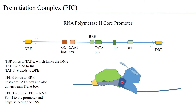Post TF2A, as mentioned, TF2B is able to recruit TF2F and the RNA polymerase 2 complex. RNA polymerase 2 has the alpha CTD tail, and the alpha CTD tail has an important role to play in RNA processing.